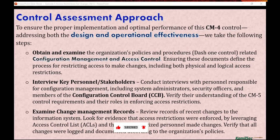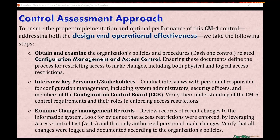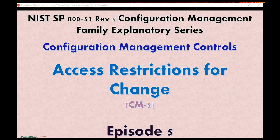Finally, examine change management records. Review records of recent changes to the information system and look for evidence that access restrictions were enforced by leveraging Access Control Lists (ACLs), and that only authorized personnel made those changes. Verify that all changes were logged and documented according to the organization's policy using a change management ticketing system.